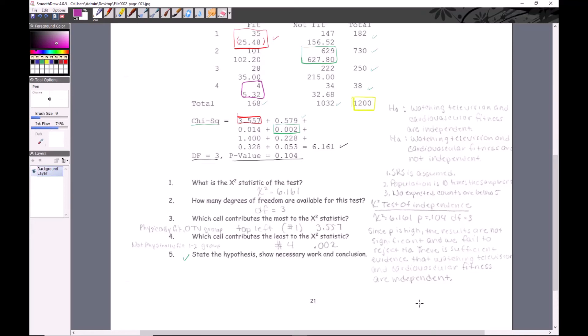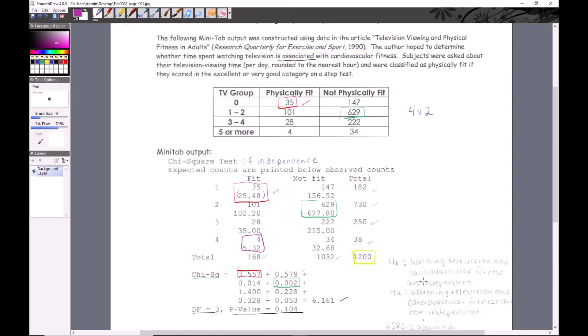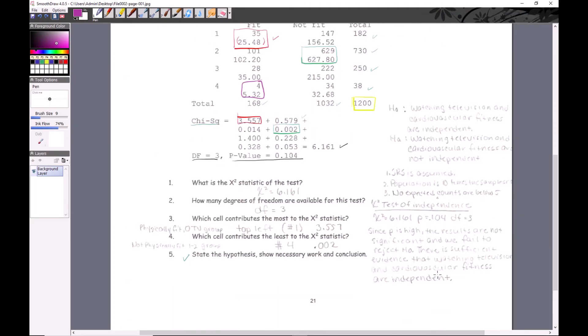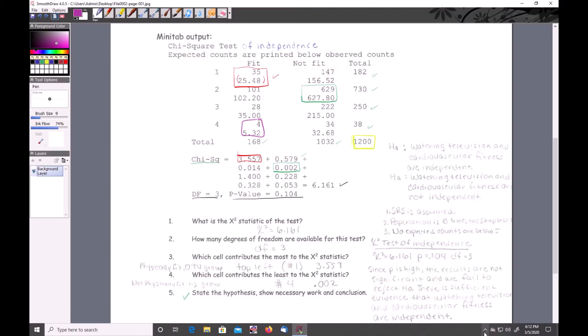You have sufficient evidence that watching television and cardiovascular fitness are independent. If they're independent, that means they're not related. If they're not related, you don't need to go back up and try to figure out if there's some kind of trend within the data. No need to look for a trend means no follow-up. I apologize for how faint this came out. We have more on the next page.